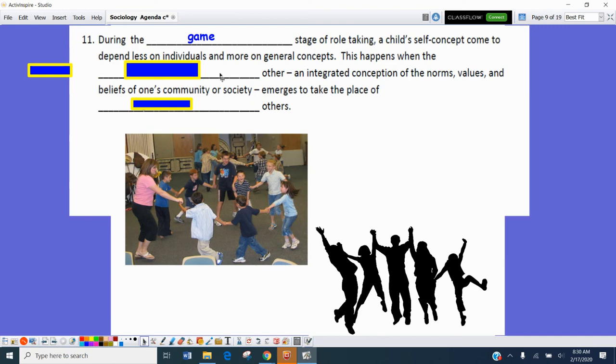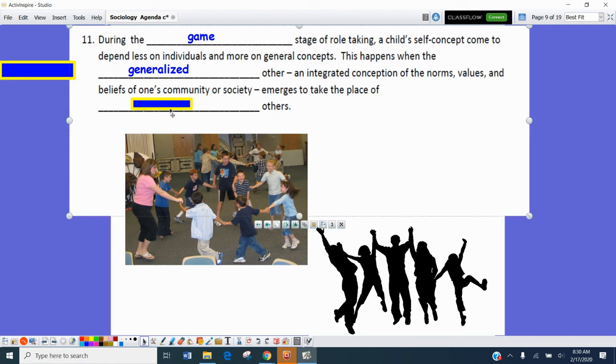A child's self-concept, for the most part, will come to depend less on individuals and more on general concepts. This happens when the generalized others becomes an integrated concept, the norms, the values and beliefs of one's community or society. And that emerges to take place of what we would call the significant others.